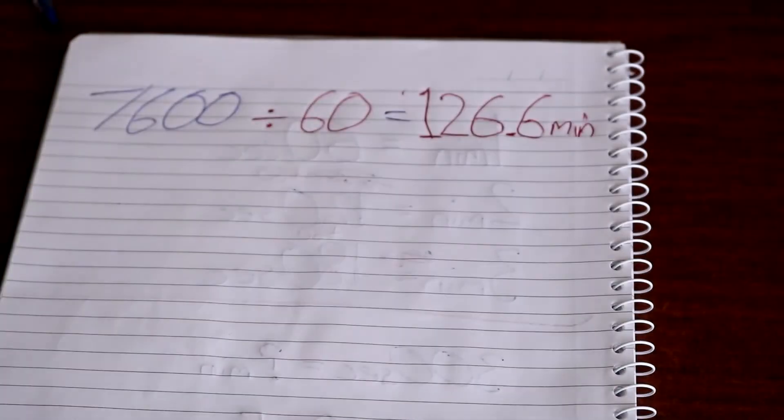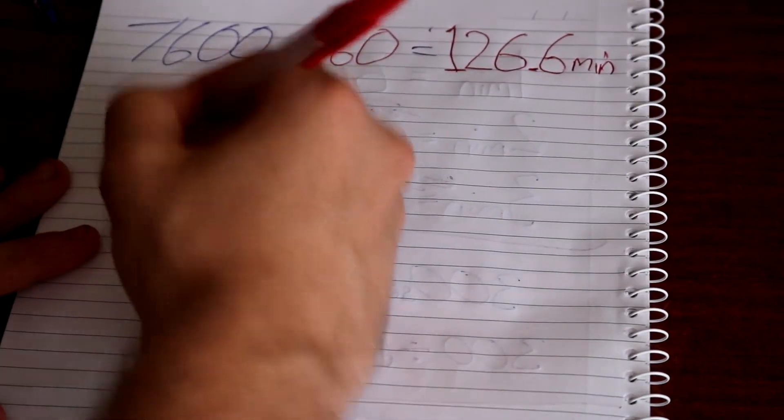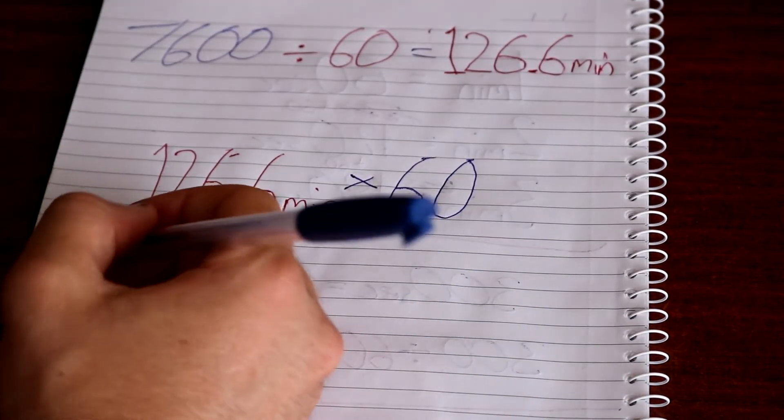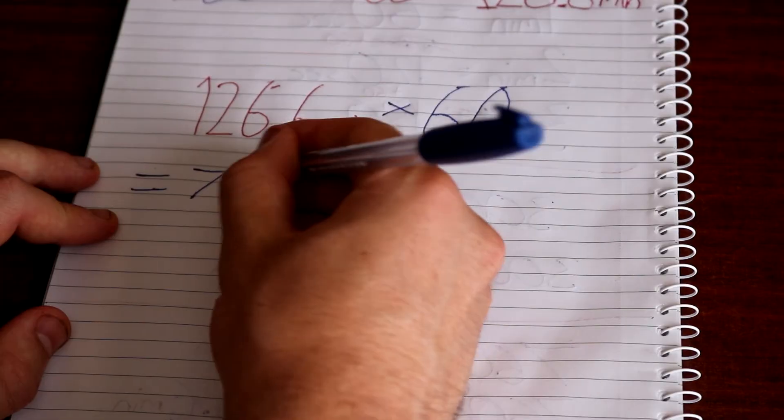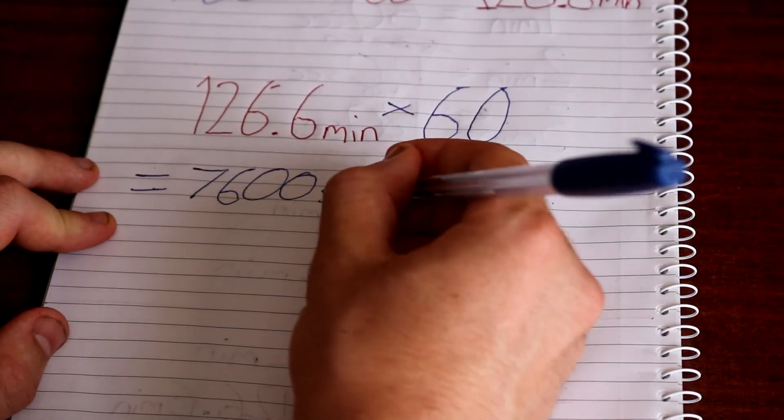To check your answers, what you want to do is obviously get the answer first. I've got my 126.6 minutes. To check that, you need to times your answer by 60, and if it equals the amount of seconds that you started with, that means your answer is correct.